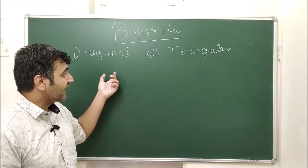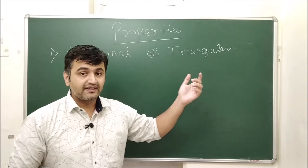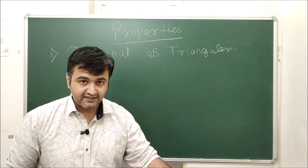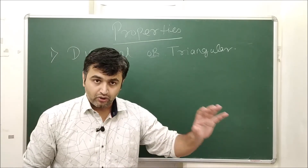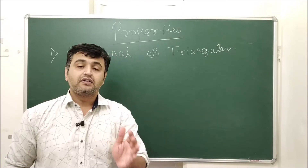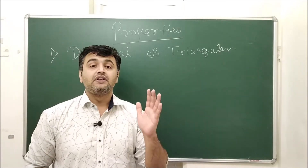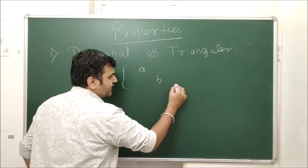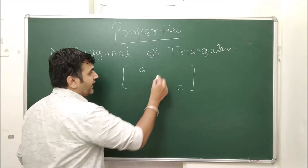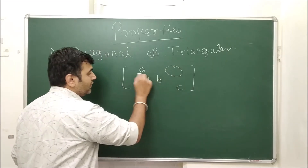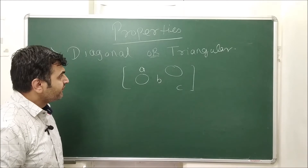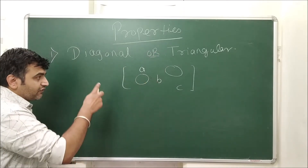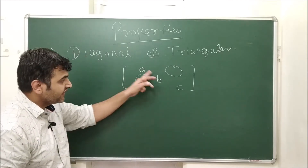The first property: if you have a diagonal matrix, an upper triangular matrix, or a lower triangular matrix, then in all three scenarios the eigenvalues are always the diagonal entries. For example, take a 3×3 diagonal matrix — the rest of the entries are 0.